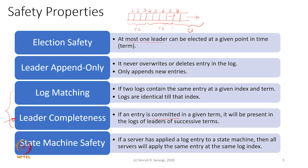State machine safety follows from the rest: if a server has applied a log entry to a state machine, then all servers will apply the same entry at the same log index. This follows from the way logs are created, the leader completeness property, and the way entries are committed. So state machine safety naturally follows and we will not prove it separately. We will essentially look at log matching and leader completeness, as they are sufficient to ensure the rest.